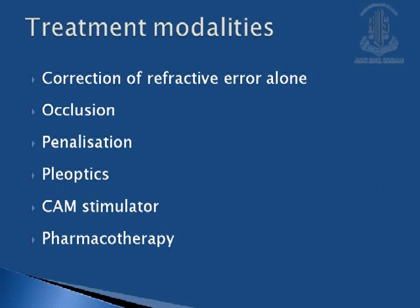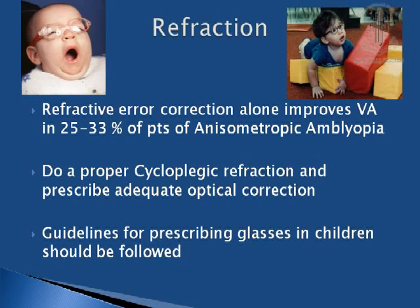The various treatment modalities: the first and most important is correction of the refractive error. Occlusion therapy is still the mainstay of amblyopia therapy, followed by penalization. Pleioptics and CAM stimulator are nowadays not used. Refractive error correction alone improves visual acuity in 25 to 33% of patients with anisometropic amblyopia. We should always perform proper cycloplegic refraction, prescribe adequate optical correction, and follow guidelines for prescribing glasses in children.